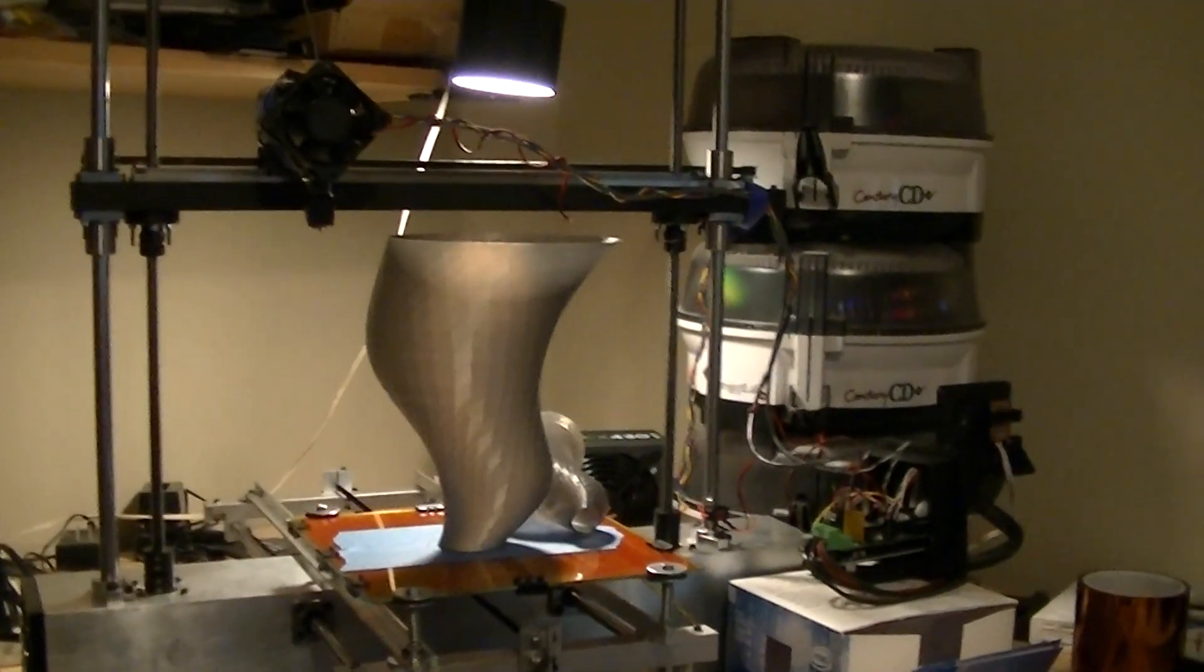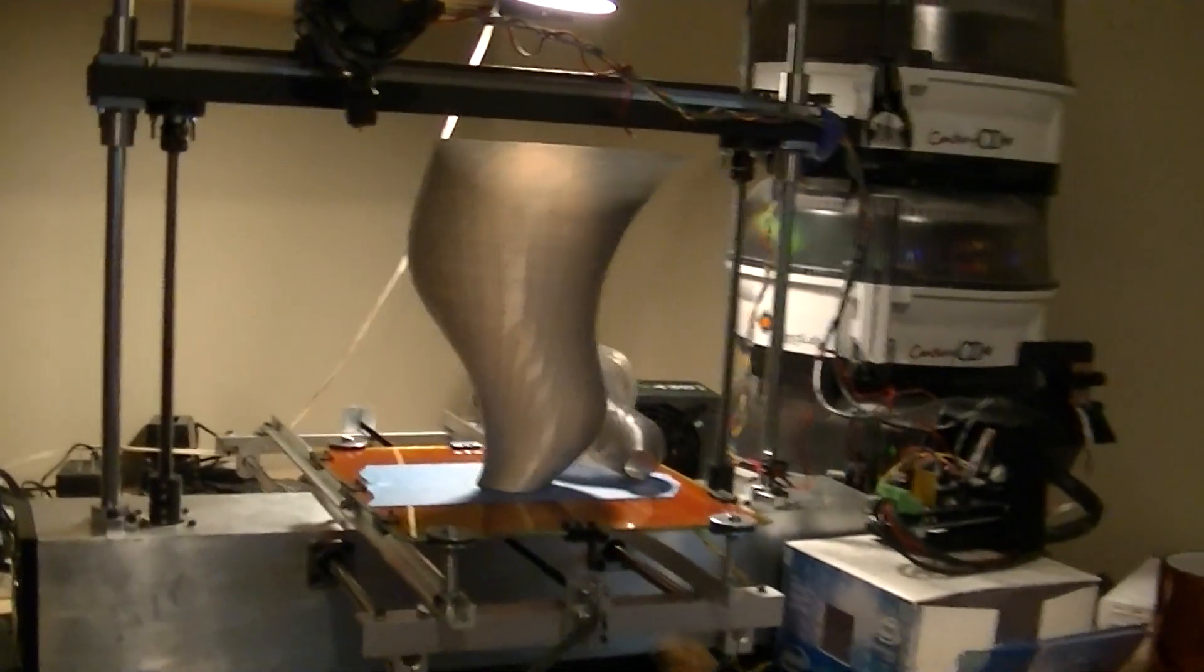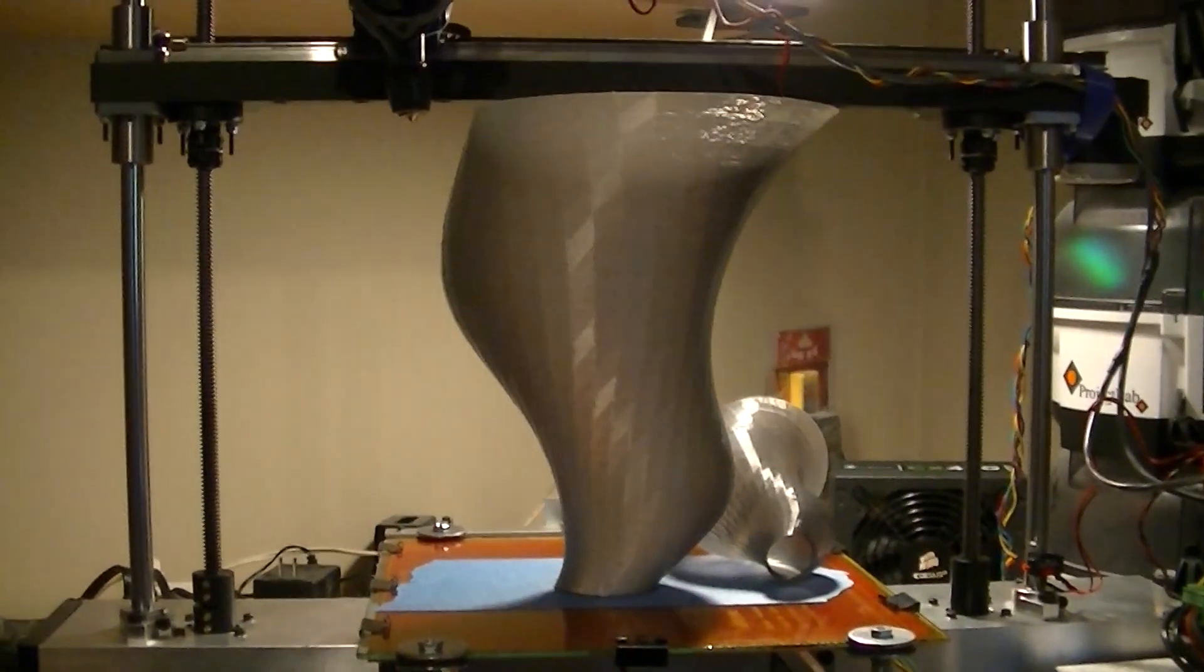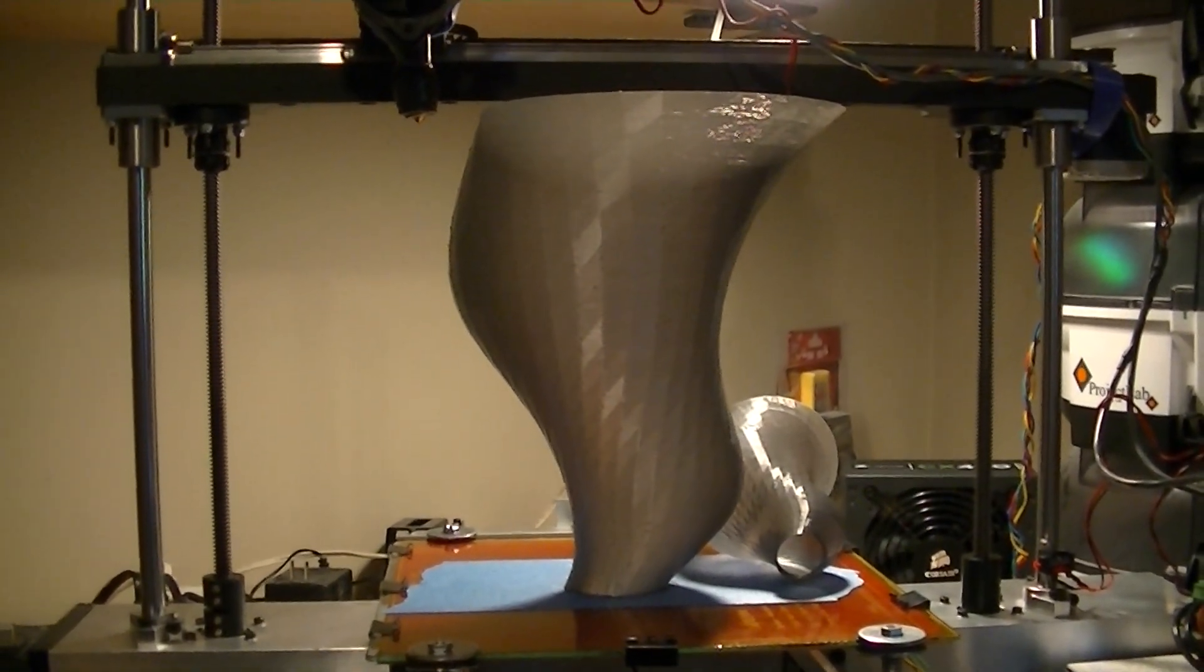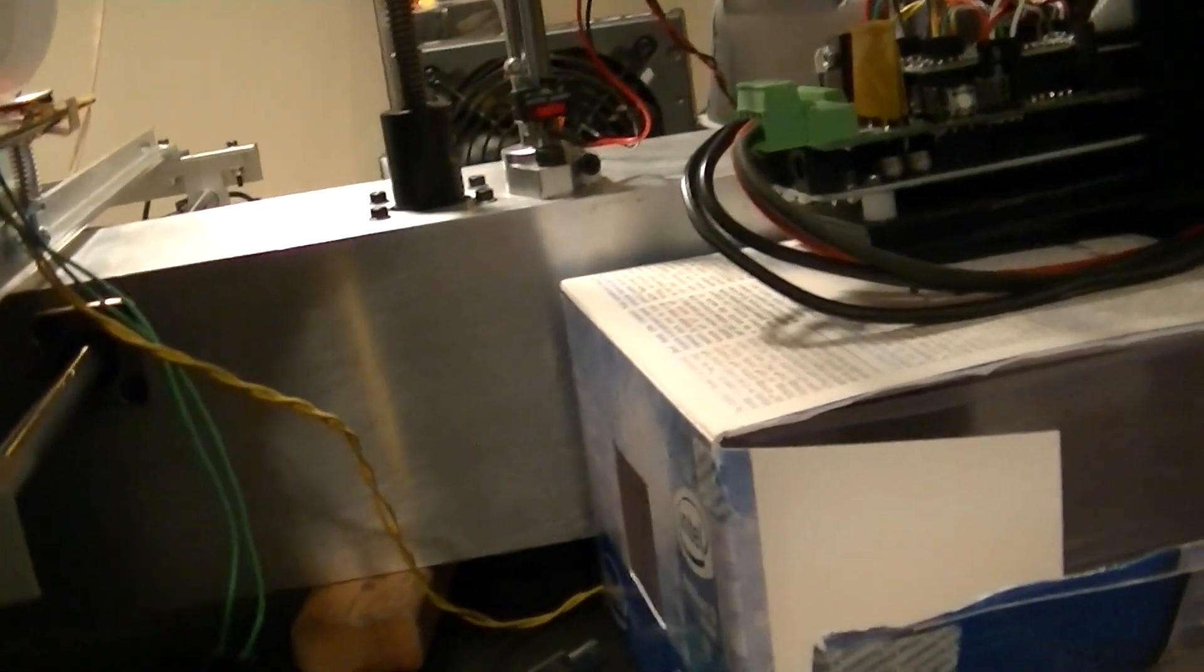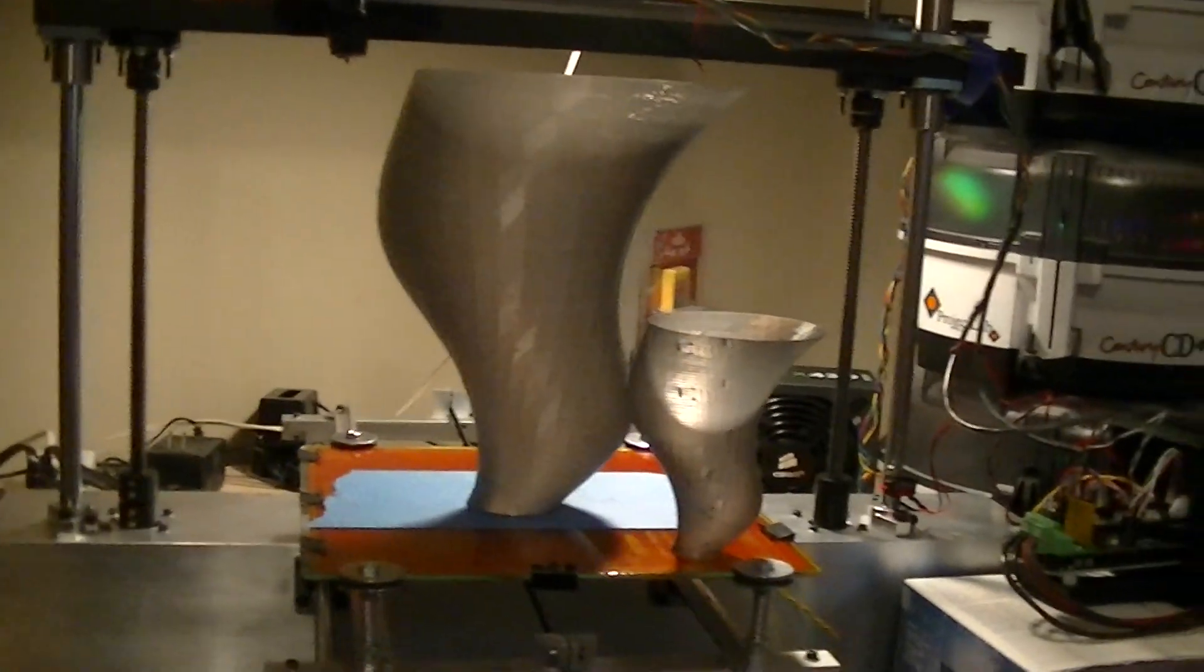This is the first print. No test cubes for this puppy. It's straight into the hard stuff. Printed a tornado. This is the one that someone submitted on Thingiverse. It's probably about 22 centimeters high. You can see beside it here I've got the little tornado that I had printed out at the max.